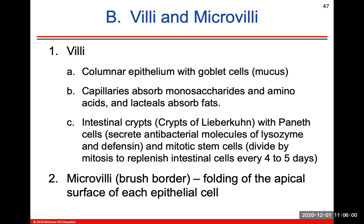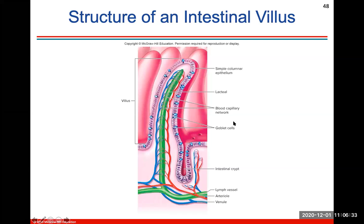A villus is lined with columnar epithelium with goblet cells. It has capillaries that absorb monosaccharides and amino acids, and lacteals that absorb fats. You have intestinal crypts with Paneth cells that secrete antibacterial molecules, and mitotic stem cells that rapidly divide to replenish intestinal cells every four to five days. The microvilli form the brush border — the folding of the apical surface of each epithelial cell — to create as much surface area as possible to trap and absorb digested material.